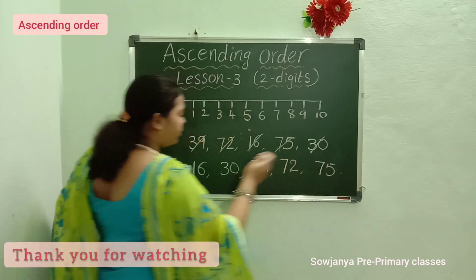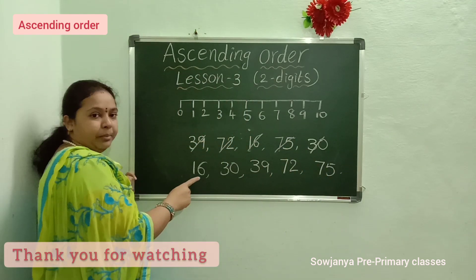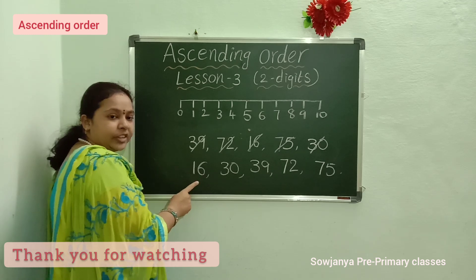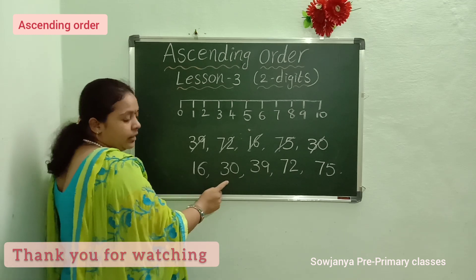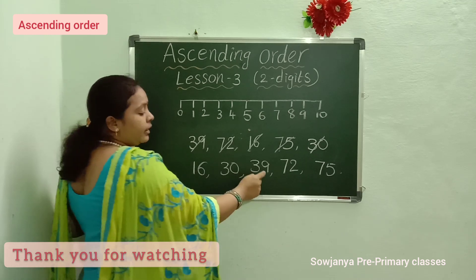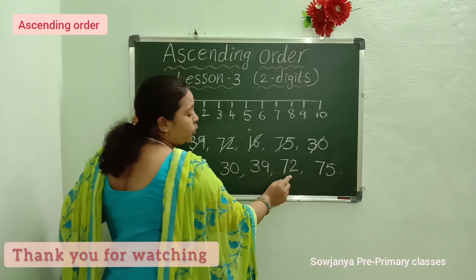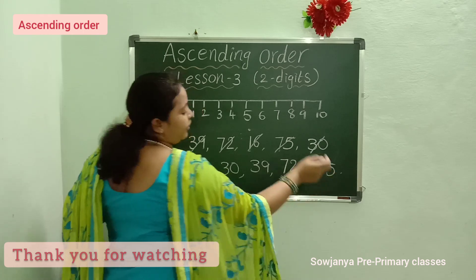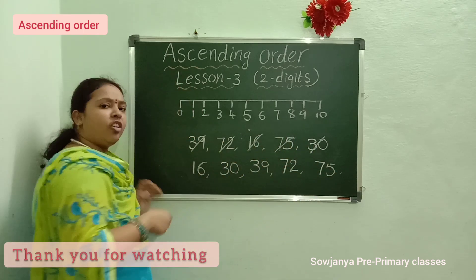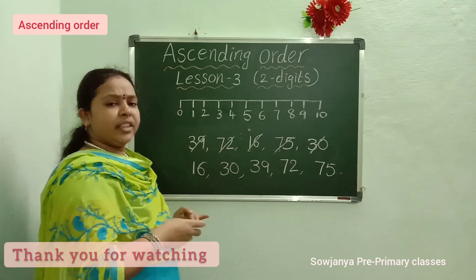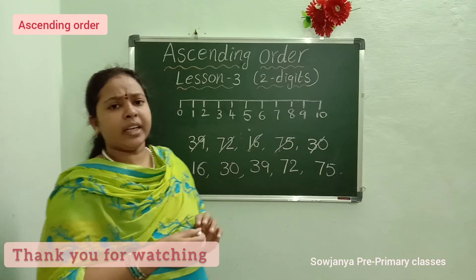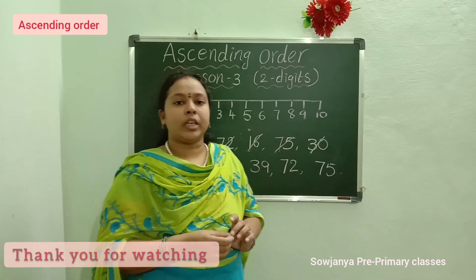Once we read the numbers: 16, 30, 39, 72, 75. Do you understand? Okay, bye.